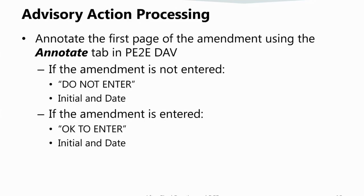When processing an advisory action, indicate on the after-final reply and/or amendment whether or not the amendment and/or reply is entered. Using the Annotate tab in PE2E Docket Application Viewer, put 'Do Not Enter' or 'OK to Enter' along with your initials and the date on the first page of the amendment.